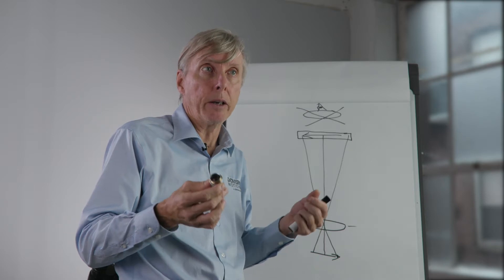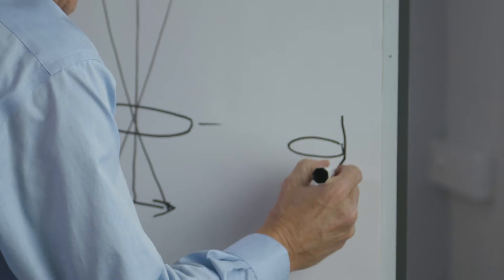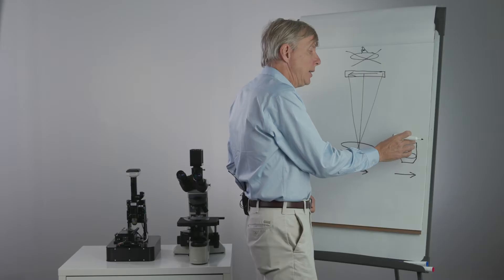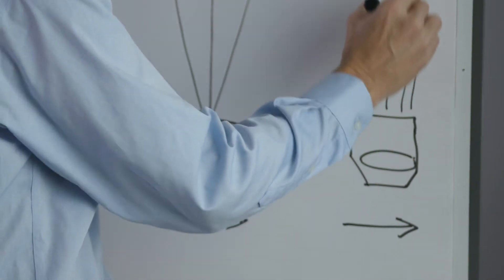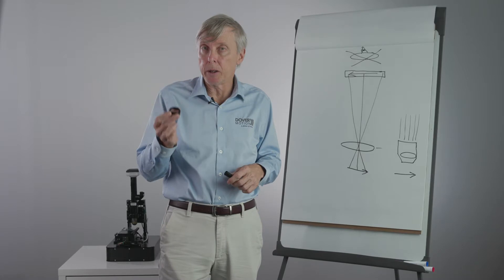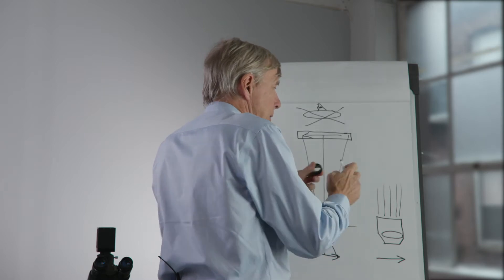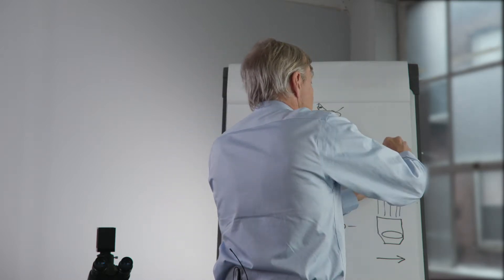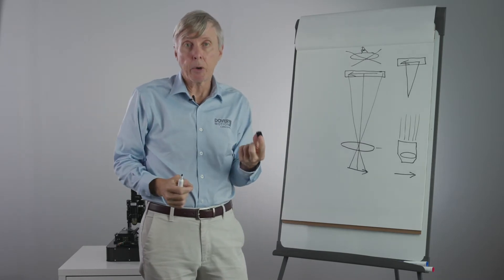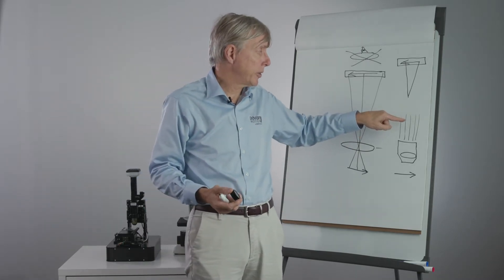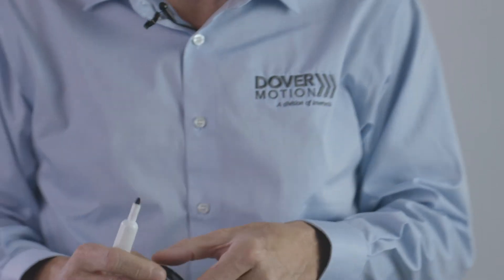In addition to the finite conjugate objective, there is the infinity corrected objective. In this case, the objective by itself does not form an image — the light coming out from any given point on the sample is parallel. This requires one additional optical element called a tube lens, which takes the parallel light from the objective and produces the image for the sensor. The advantage of an infinity corrected system is that you can place additional optical elements in this area, and with parallel light they don't produce the aberrations that would otherwise occur with angled light.